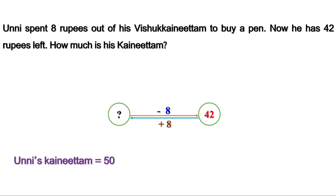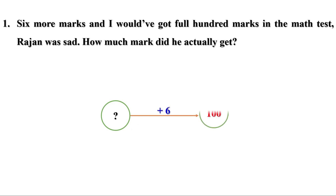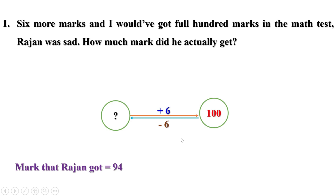Now let us do the problems on page 34. First one: '6 more marks and I would have got full 100 marks in the maths test,' Rajanvoo said. How much mark did he actually get? We don't know how much mark he got. But 6 more means add 6, and then it is full 100. We need to get the marks before adding 6 — just do the reverse or subtract 6. We will get 94. So this is his marks. When 6 is added to 94, it is 100.